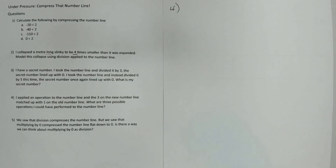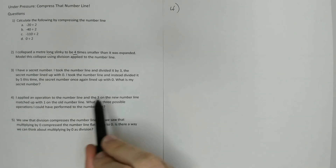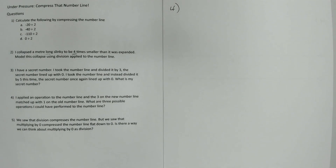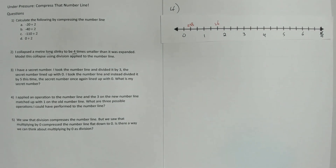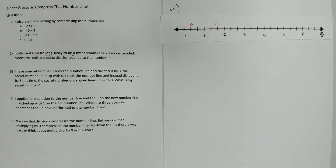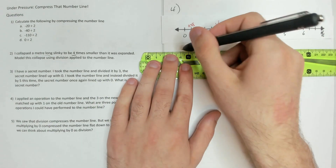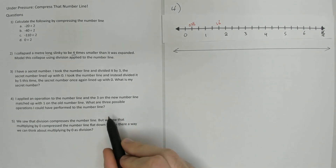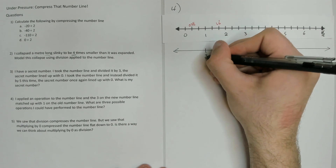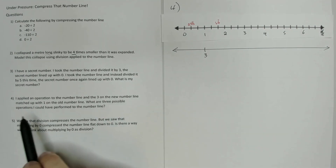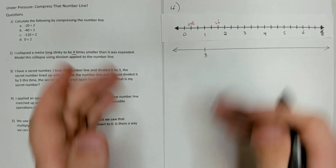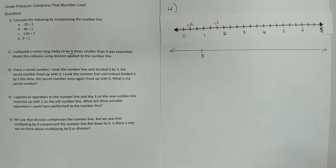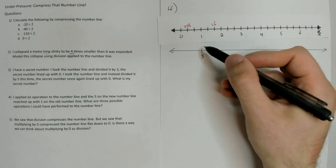Question 4: I applied an operation to the number line and 3 on the new number line matched up with 1 on the old number line. What are 3 possible operations I could have performed? So we're taking a number line and some operation was applied such that 3 on the new number line lines up with 1 on the old number line. Maybe we shifted the number line, or maybe we stretched or compressed it by some amount to get the 3 to line up with 1.